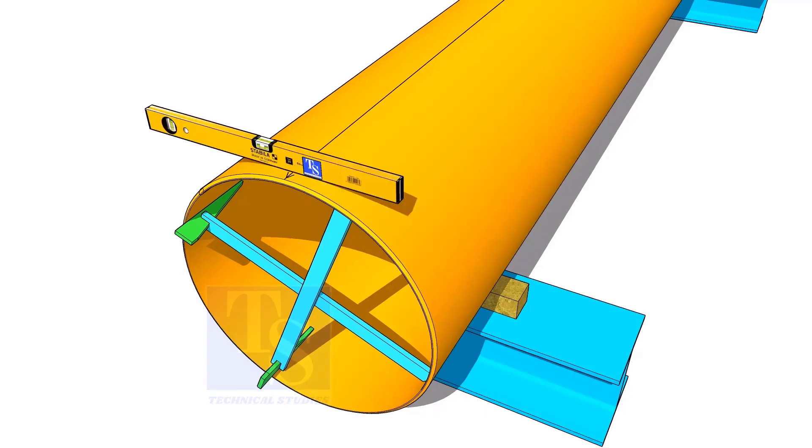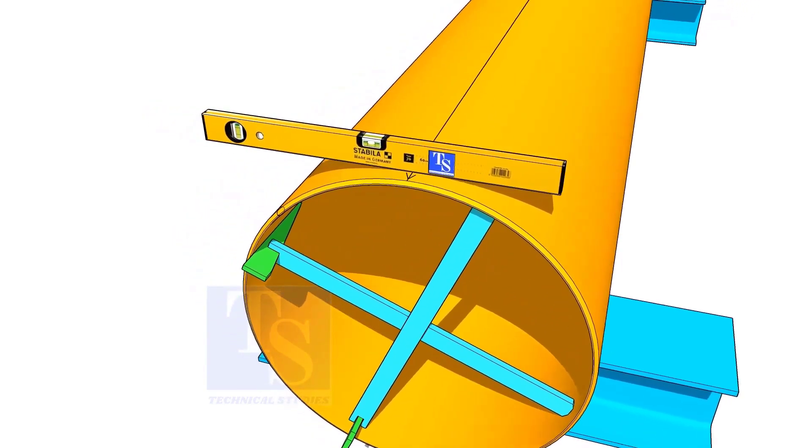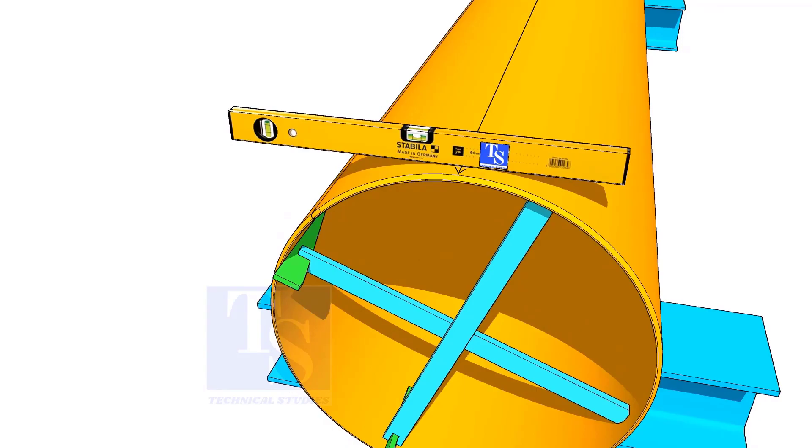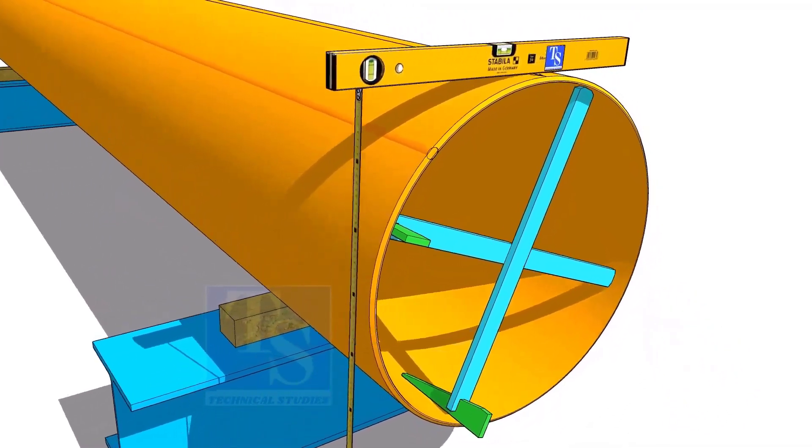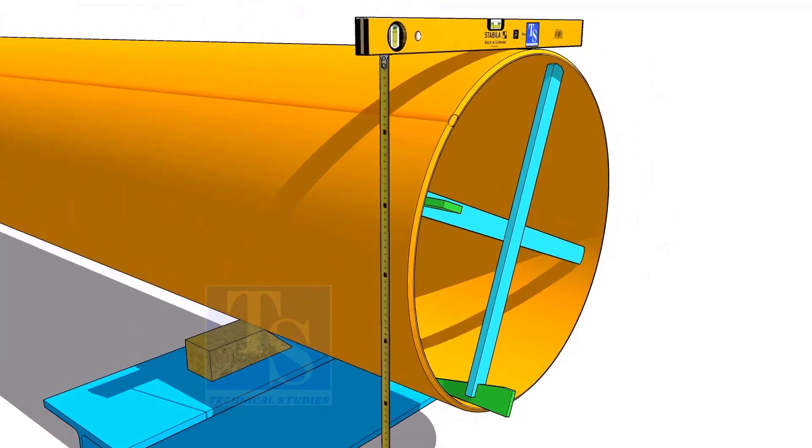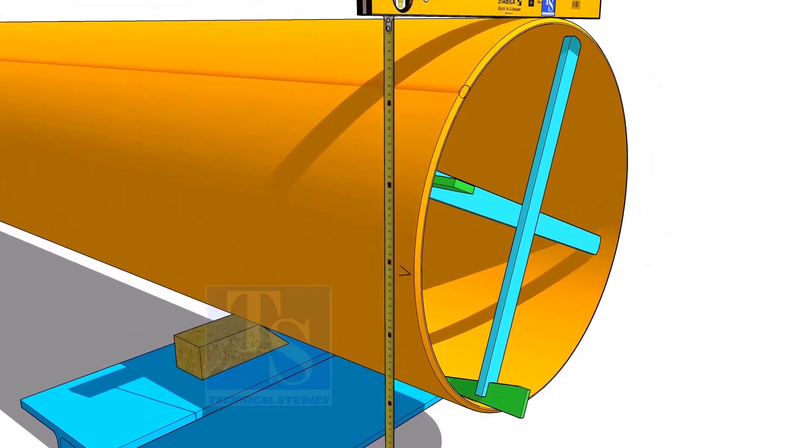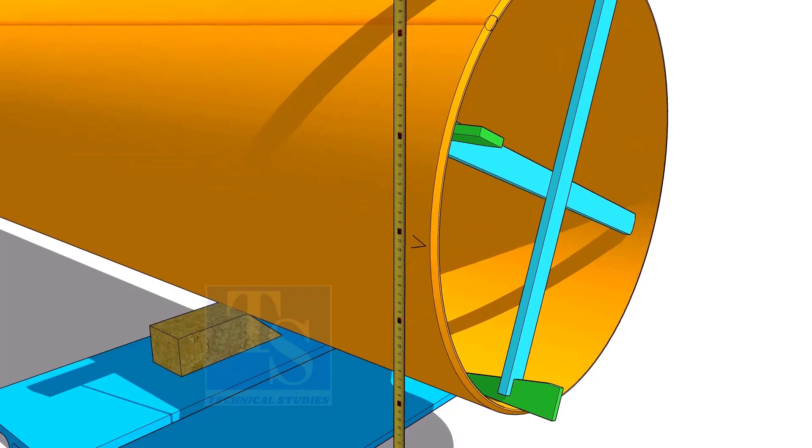Another method to mark the center line is, hold the level bottle horizontal and mark half OD on the side of the pipe. The advantage of this method is, you can mark two opposite center lines at the same time.